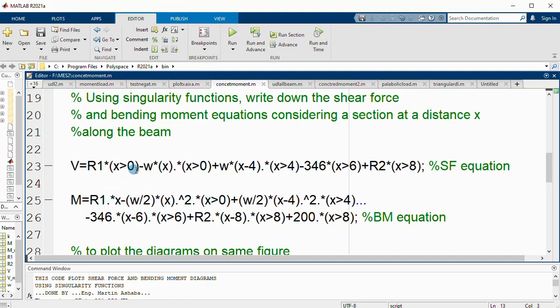For bending moment, we integrate so that you have R1 times x. If I integrate W into x, it will be W out of 2 x squared. Then plus W out of 2 times x minus 4 squared. Why am I using a dot here? I'm trying to make it element-wise multiplication. Otherwise I will get errors, because these are like matrices and must be multiplied when they are of the same sizes. If they are different, then you have errors.